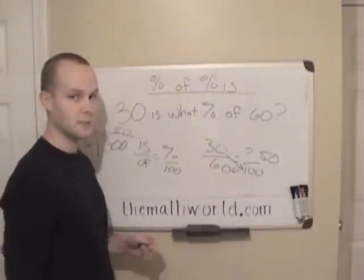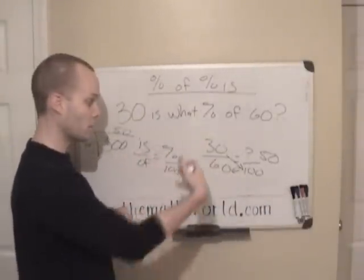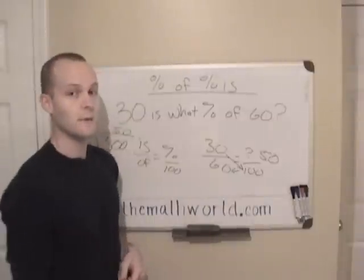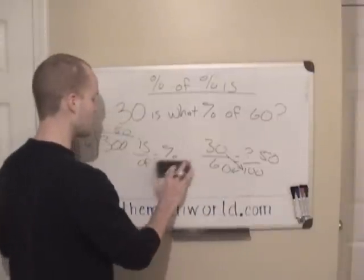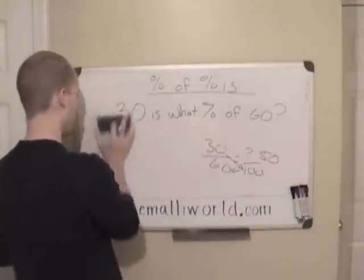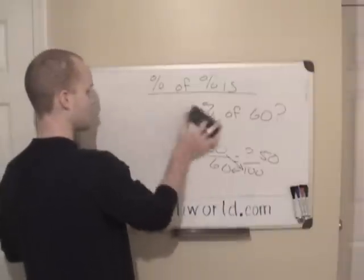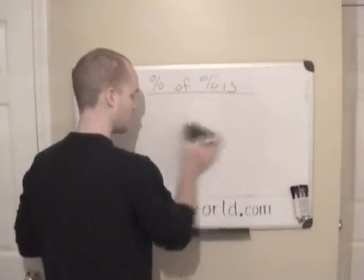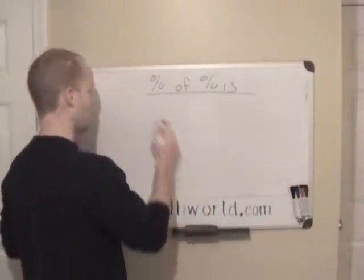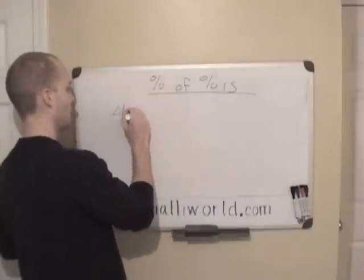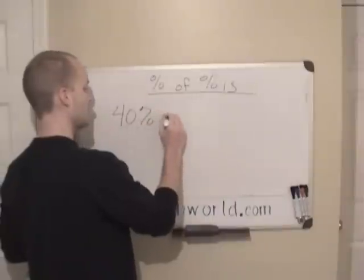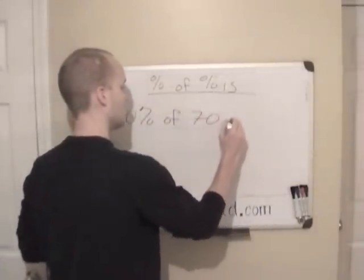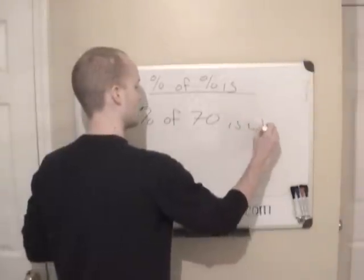So any time you're given one of these problems, you just need to fill in what you have: is over of and the percent. And that will give you the other answer. We'll go ahead and take a look at one more example. We'll say 40% of 70 is what number?